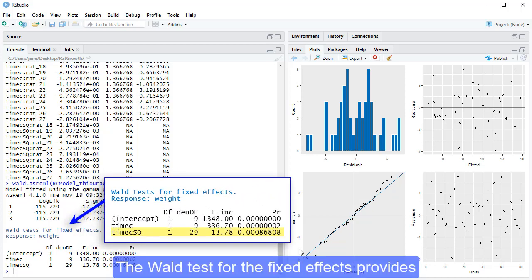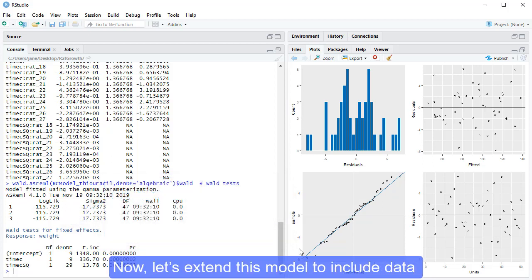The Wald test for the fixed effects provides evidence of curvature in the weight profiles of thiouracil treated rats over time. Now, let's extend this model to include data from all three drug treatments.